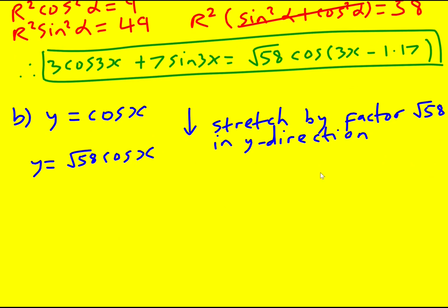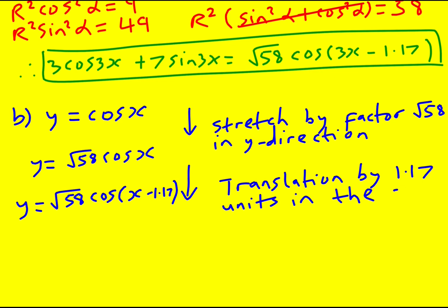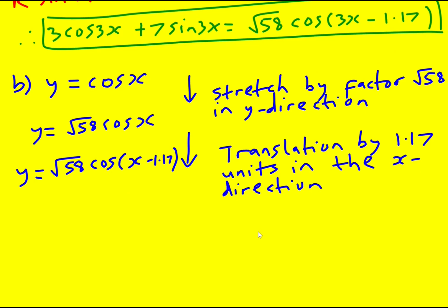Now I need to get the minus 1.17. So replace x by x minus 1.17. That's actually a translation by 1.17 units in the x direction. Because inside the bracket, you do the opposite. Okay, this is hardly an introduction, by the way, into transformations. I'm assuming you're familiar with them - the stretches and translations and reflections. So I'm just going through the process of what you would then do.